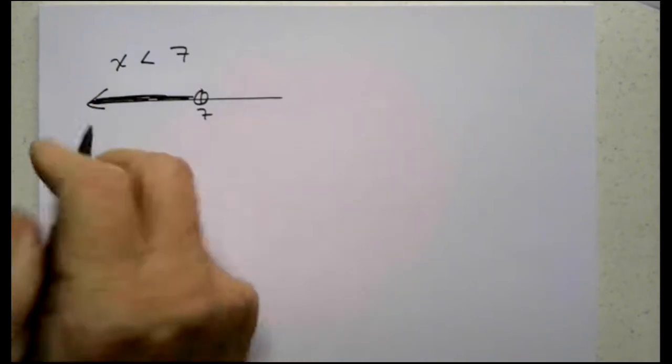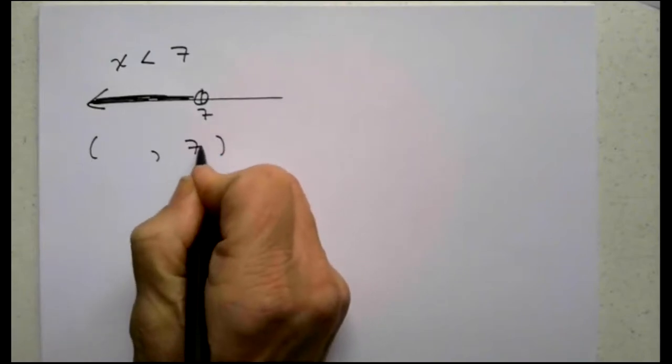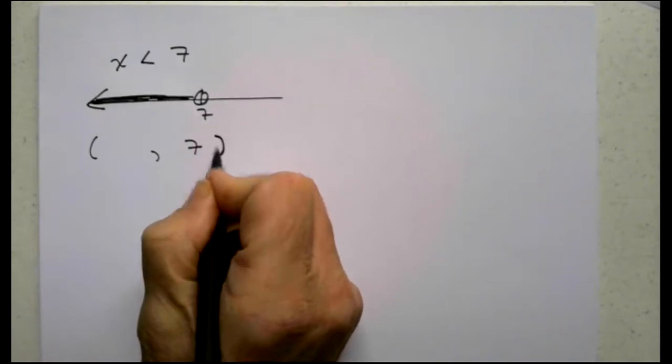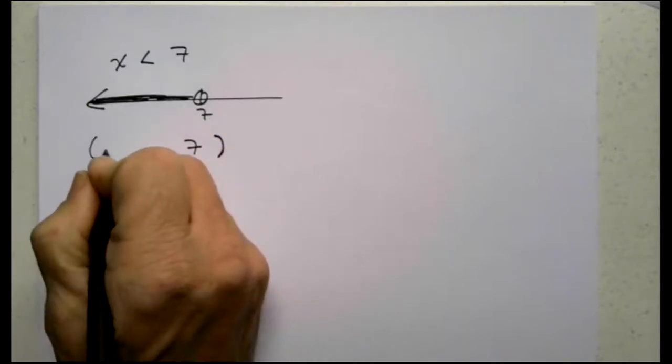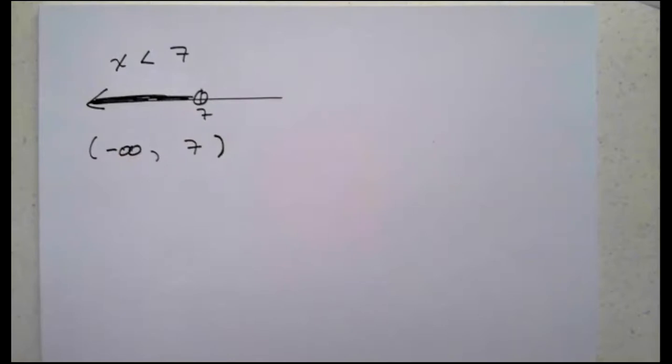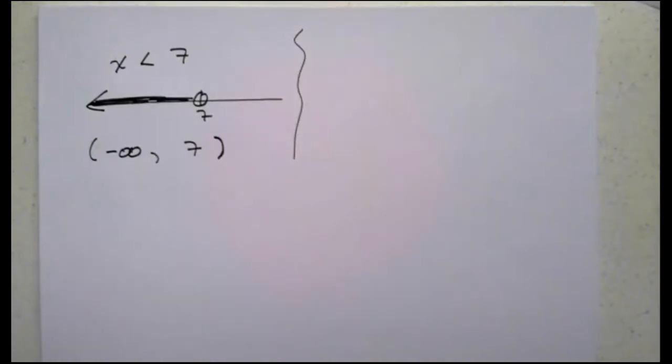So interval notation always goes left to right. So starting at the left, ending at the right. 7 is on the right and it's a round bracket because I never actually get to 7 and it goes as far left as you want. So it goes to negative infinity. Again, I never actually get there so I use a round bracket to indicate that fact.